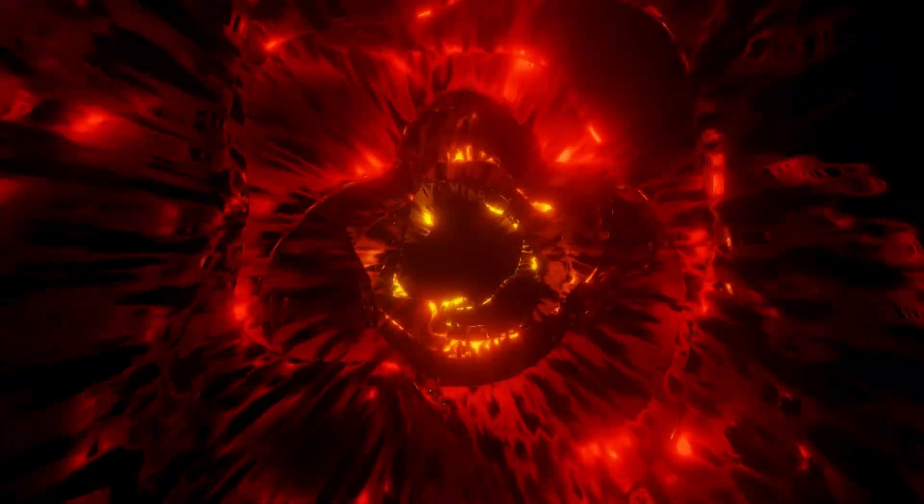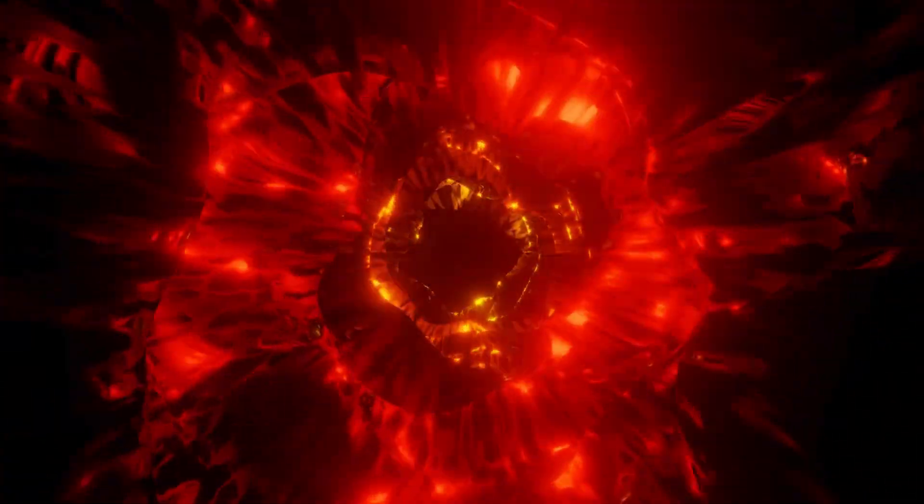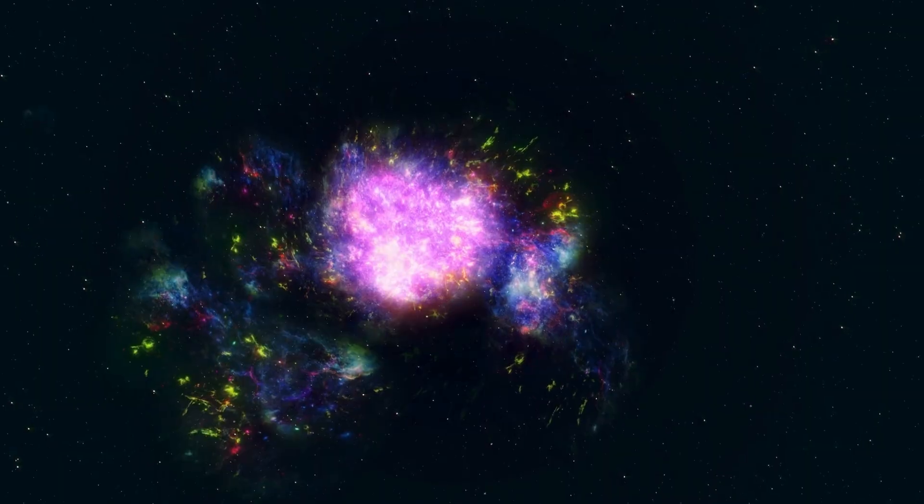Betelgeuse is a red giant star. If you put it where the sun is, it would extend out to the orbit of Jupiter. It's enormous. It's very unstable. It's about to explode.